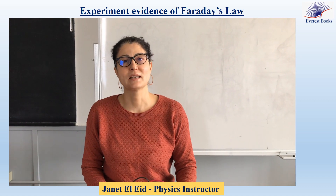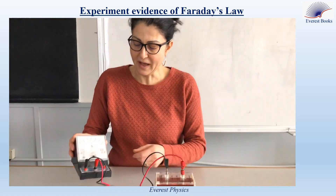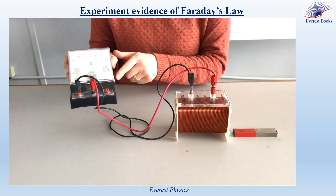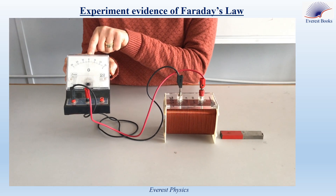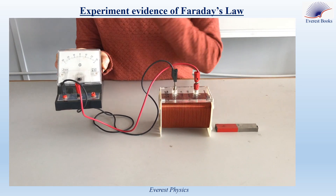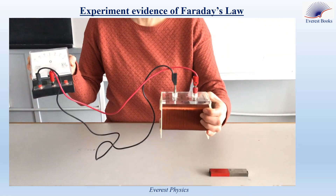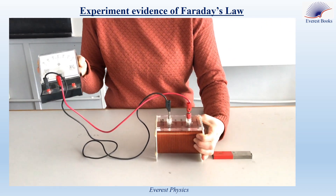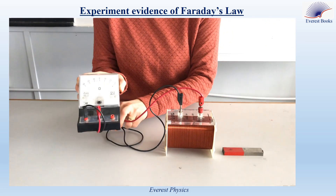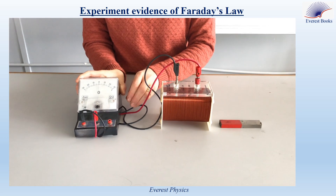This experiment is about Faraday's law. We have a galvanometer set to measure electric current. The zero of the galvanometer is in the middle of its screen. The galvanometer is connected across the terminals of a copper coil. This closed circuit does not include a source of electromotive force.